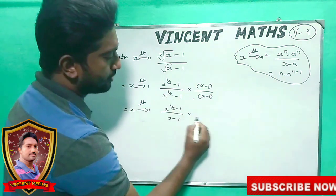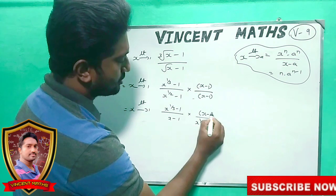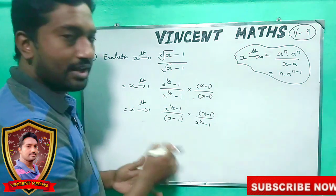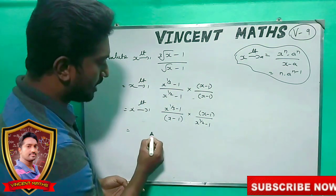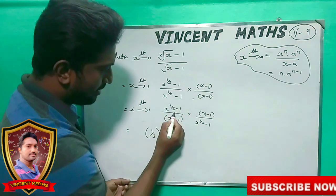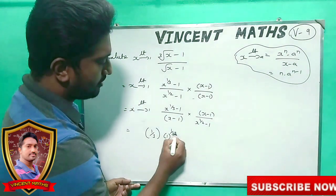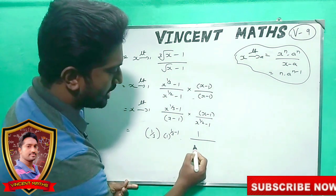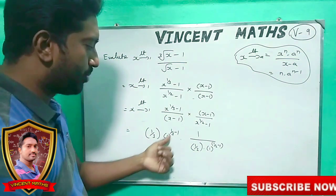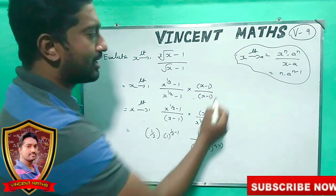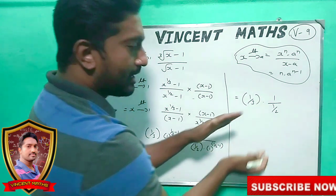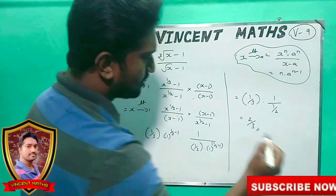So we get [x^(1/3) − 1]/(x − 1) divided by [x^(1/2) − 1]/(x − 1). Applying the formula: numerator gives (1/3)·a^(1/3 − 1) with a equals 1, that is 1 by 3. Denominator gives (1/2)·1^(1/2 − 1), that is 1 by 2. So the answer is (1/3) divided by (1/2), which equals 2 by 3.